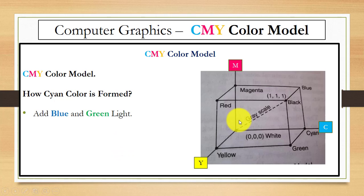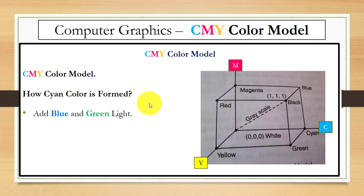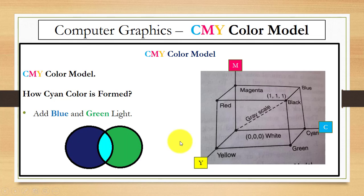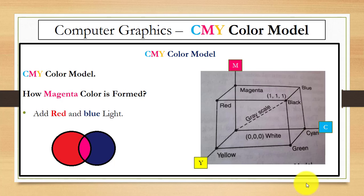Now how can we form cyan color? You can see this cube — this cube represents the CMY color model. You can produce cyan color by adding blue light with green light. When you add blue plus green, it is cyan.